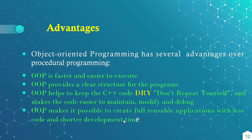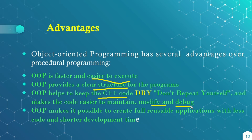Advantages. OOP has several advantages over procedure oriented programming. It is faster and easier to execute, which provides a clear structure for the program. OOP helps to keep C++ code DRY — that is Don't Repeat Yourself — and makes the code easier to maintain, modify, and debug. OOP makes it possible to create fully reusable applications with less code and a shorter development time with the help of inheritance.